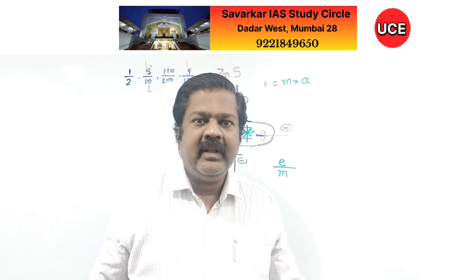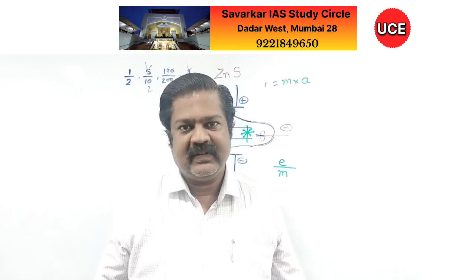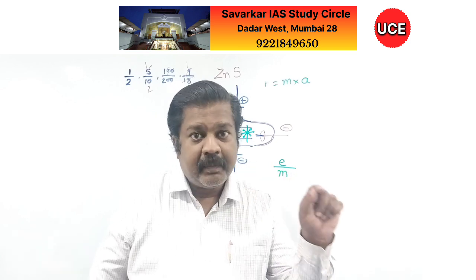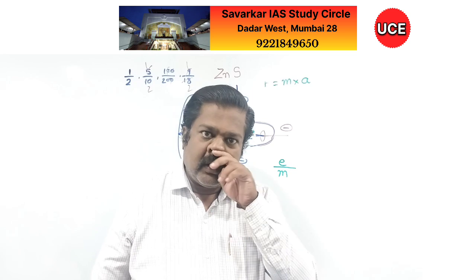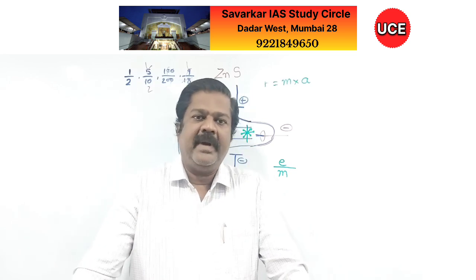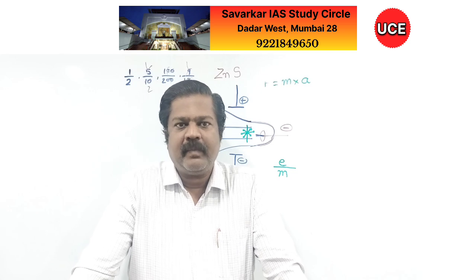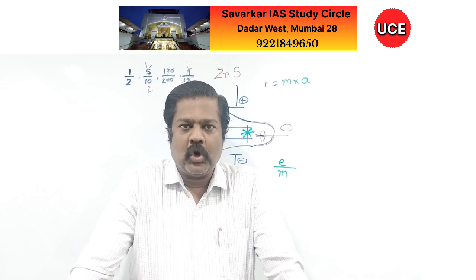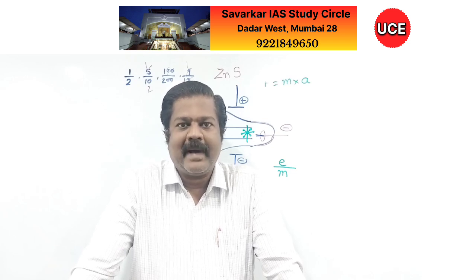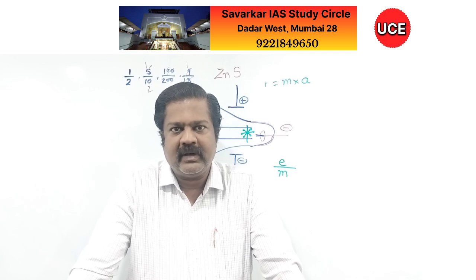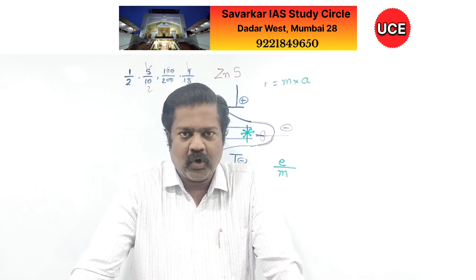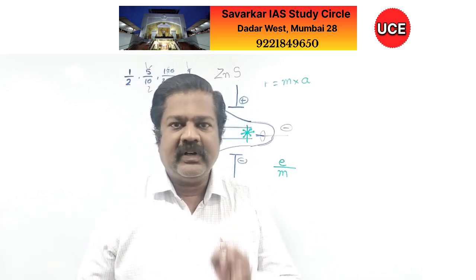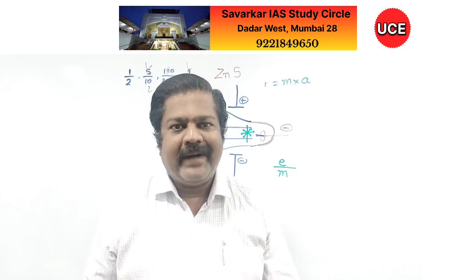Whatever element is used, it emits the same type of cathode rays. That means cathode rays must be made up of a material present everywhere. Because a variety of metals are emitting the same type of cathode rays, he termed that particle as an electron — the smallest unit of electricity. This is the first sub-atomic particle.